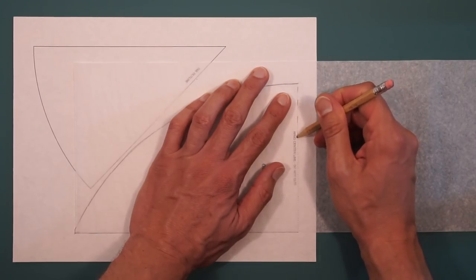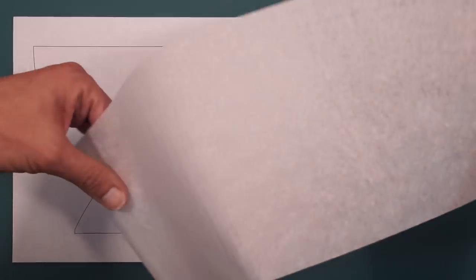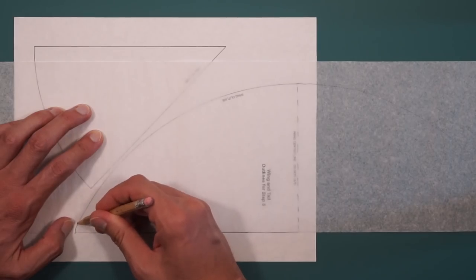Draw the center line, then I'm going to flip the tissue over, line it up again, and trace the other wing.